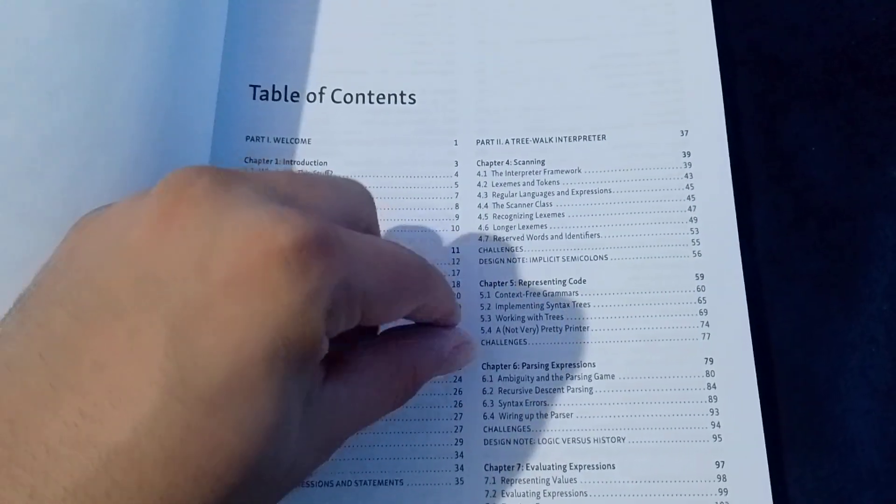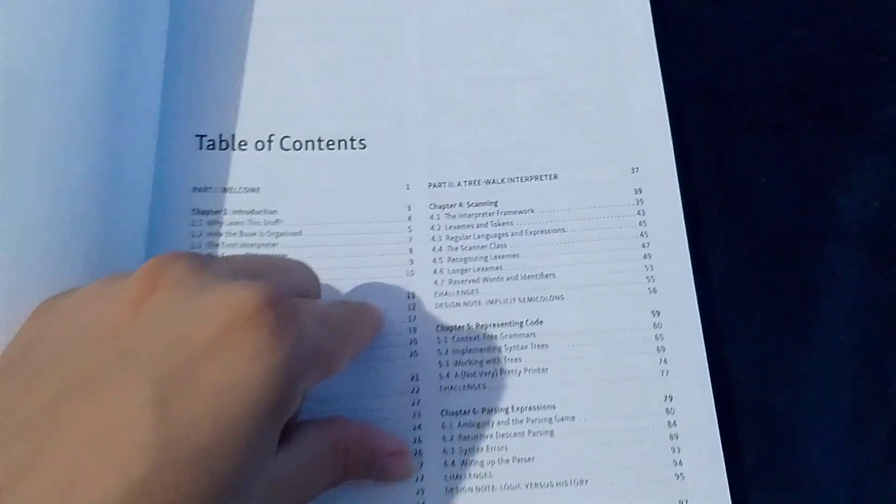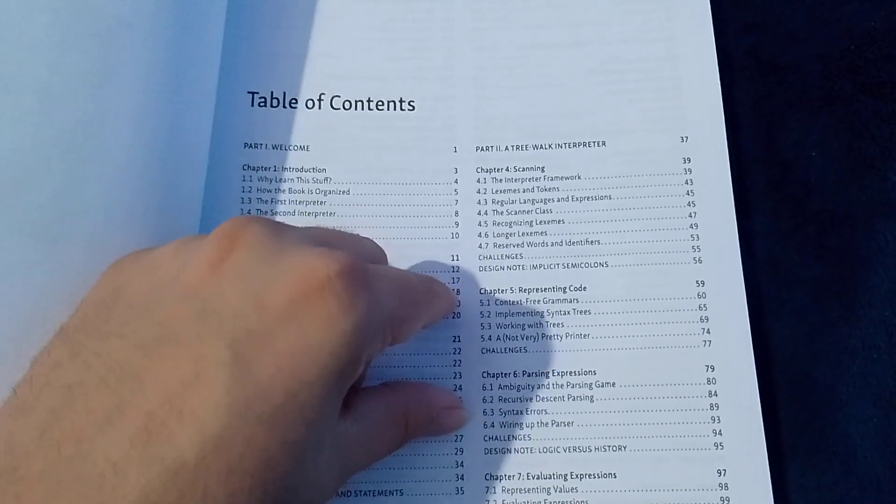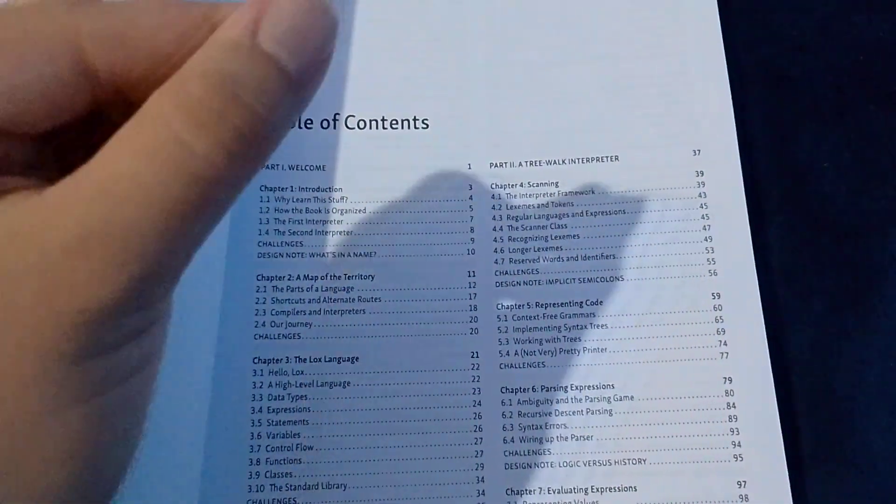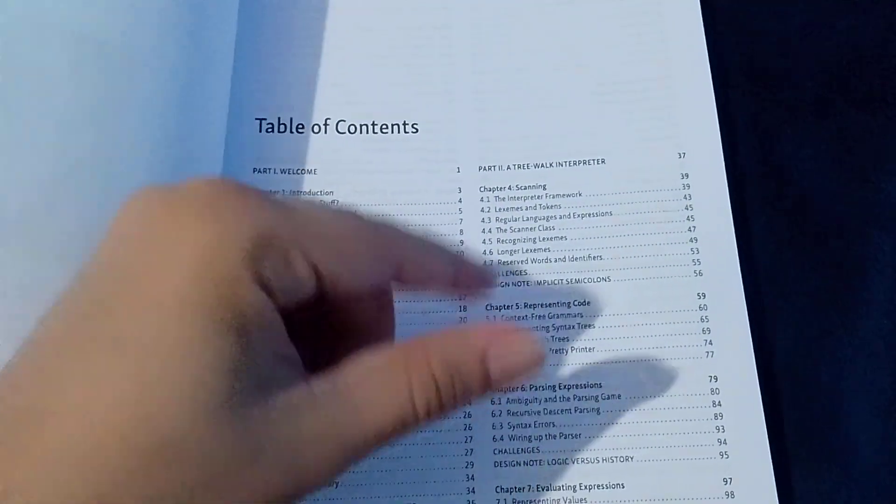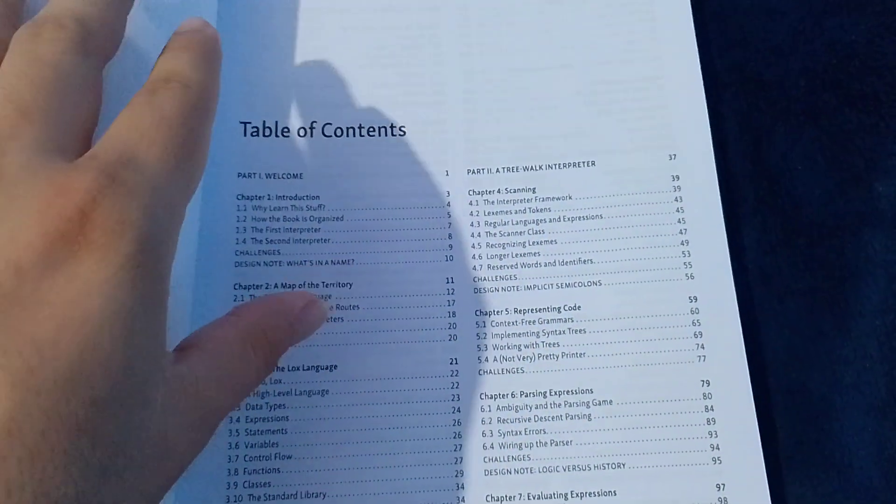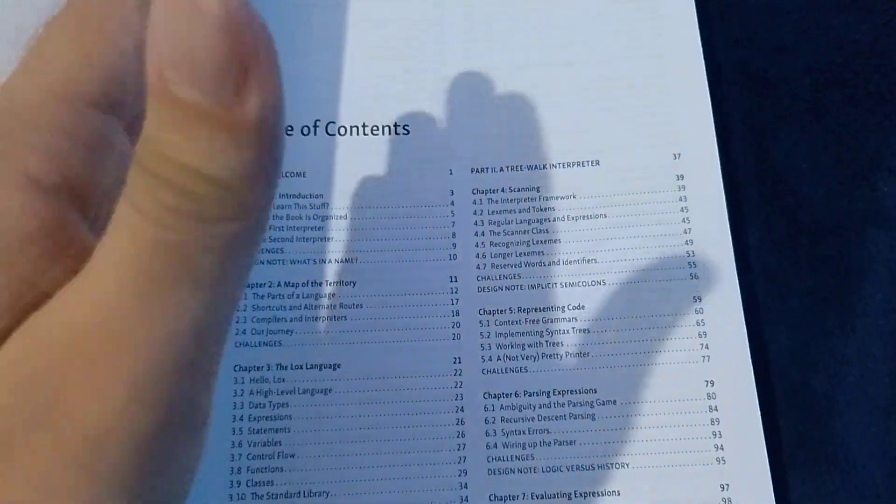So, just to make it short. LOX language is more like JavaScript. But, how can I say? It's very similar to JavaScript. So, the operators, the way we make functions, closures, everything is similar to JavaScript.